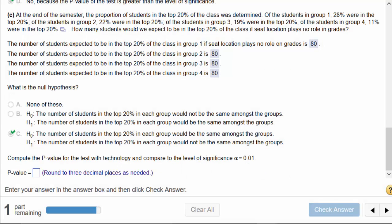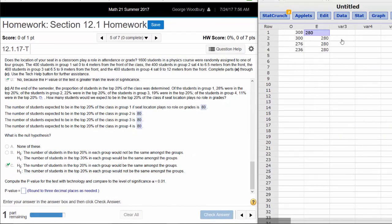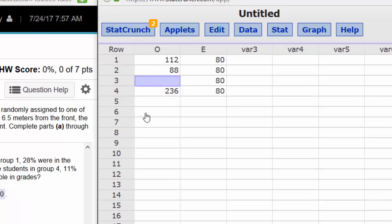And we need a p-value. So coming back to StatCrunch, I know that the expected frequency for each group is 80. But what we haven't figured out yet is the observed frequency for each group. Here's where we go back to those percentages laid out in part C. 28% from group 1 were in the top 20%, so I'm going to multiply 400 by 28%. That is 112. In group 2, 22% were in that top 20%. 400 times 22% is 88. Group 3, 19%, 400 times .19 is 76. And group 4, 400 times 11% is 44.